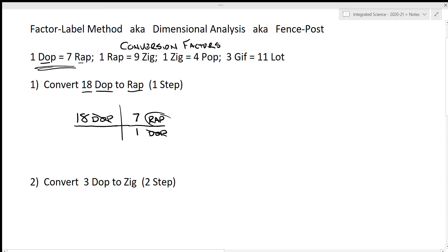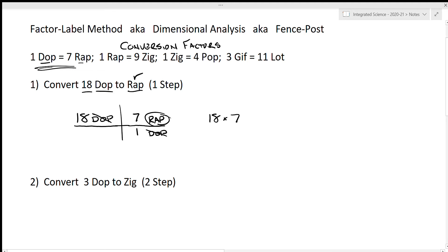The dot cancels and I'm left with a unit of wrap. Once my units are resolved and I have the correct unit, I just calculate: 18 times 7 on the calculator gives me 126 wrap. That's my answer — a simple one-step conversion.